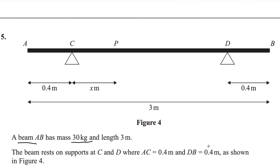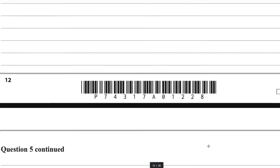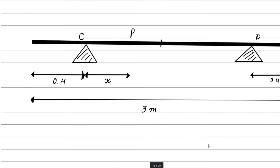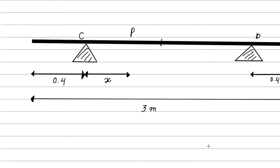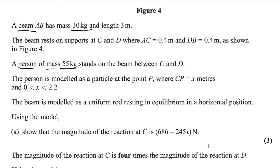We need to use this diagram — I already drew it here. Now, the most important thing: the mass of the beam is 30 kg, and it is a uniform rod. This point is very important: if it is a uniform rod, the mass will act at the center of the beam.